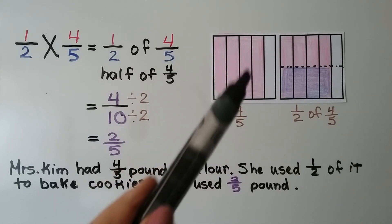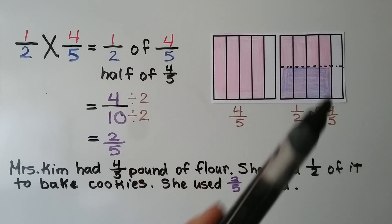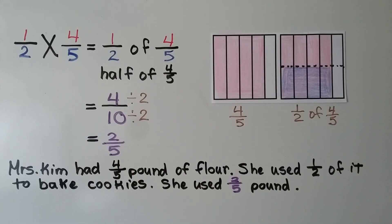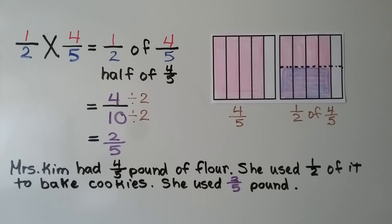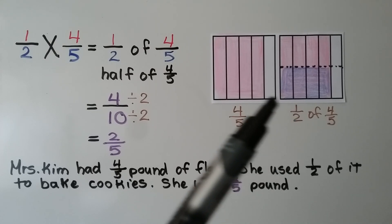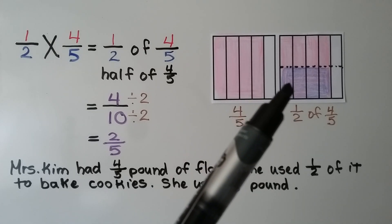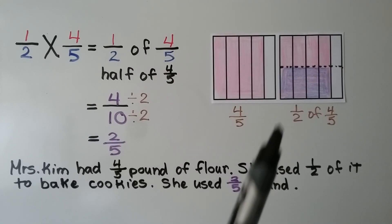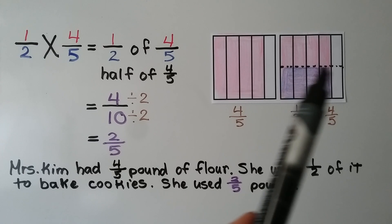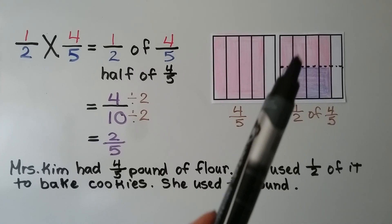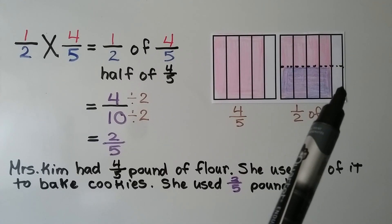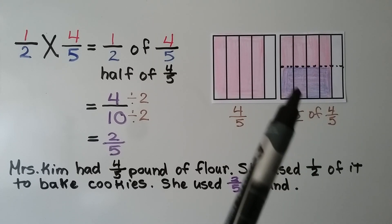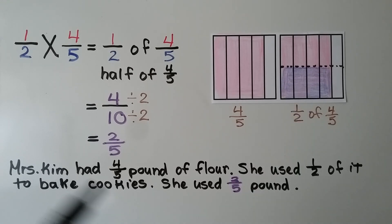We shade in half of the previously shaded part — half of these four bars, which is half of four-fifths. That gives us four of ten equal parts. Now split in half, there are ten parts in all, and four are shaded twice. That means we have four-tenths shaded twice.